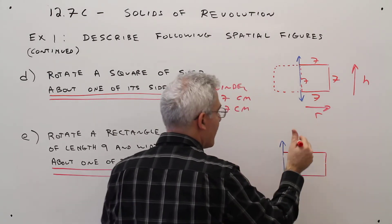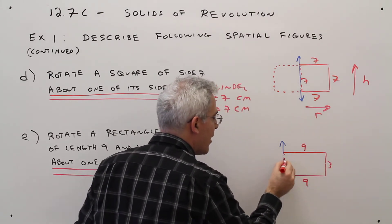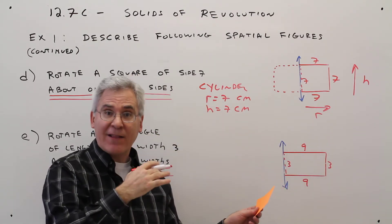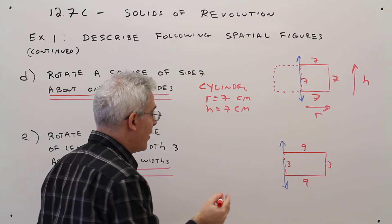So I'll say it's 9, 9, 3, 3. And the first thing I like to do is actually reflect that about the line of rotation.